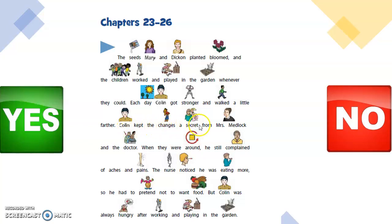Colin kept the changes a secret from Miss Medlock and the doctors. When they were around, he still complained of aches and pains. The nurse noticed he was eating more, so he had to pretend not to want food. But Colin was always hungry after working and playing in the garden.